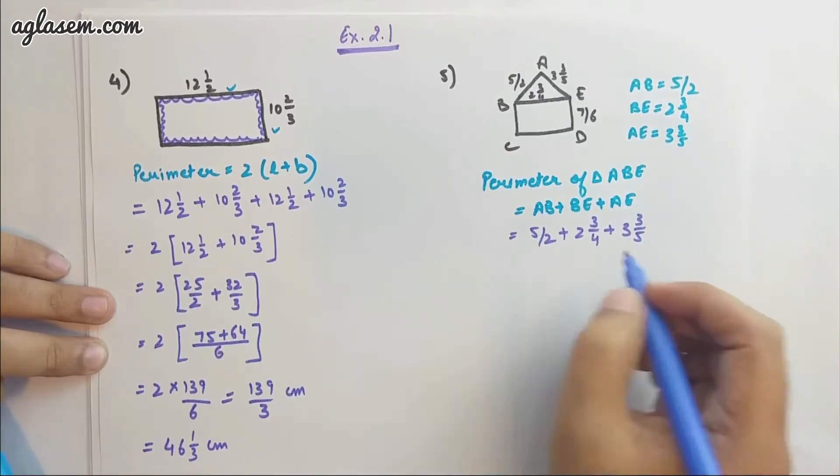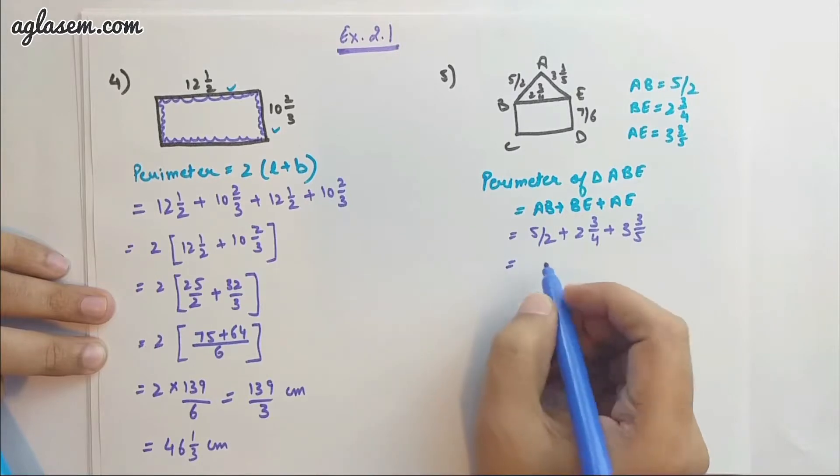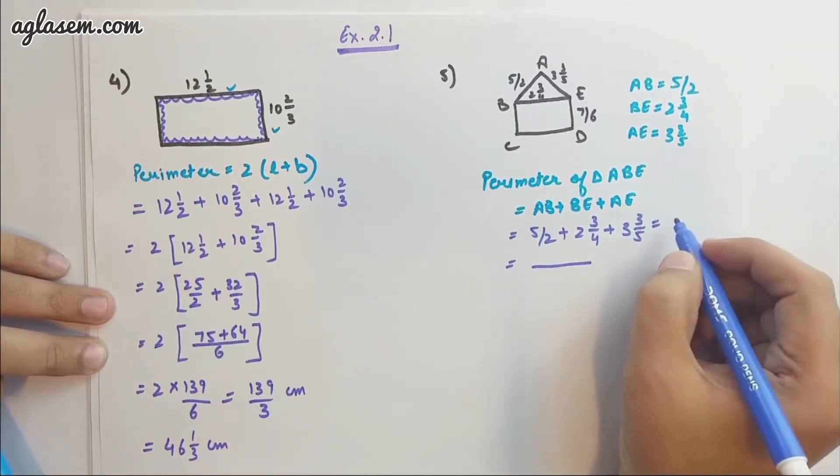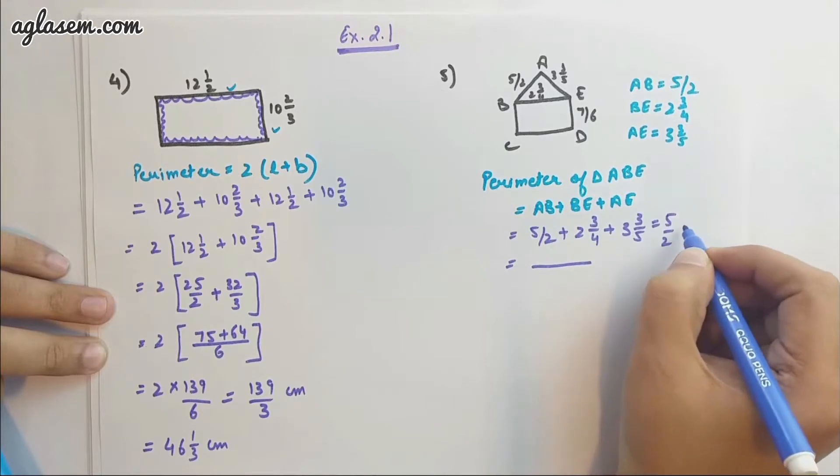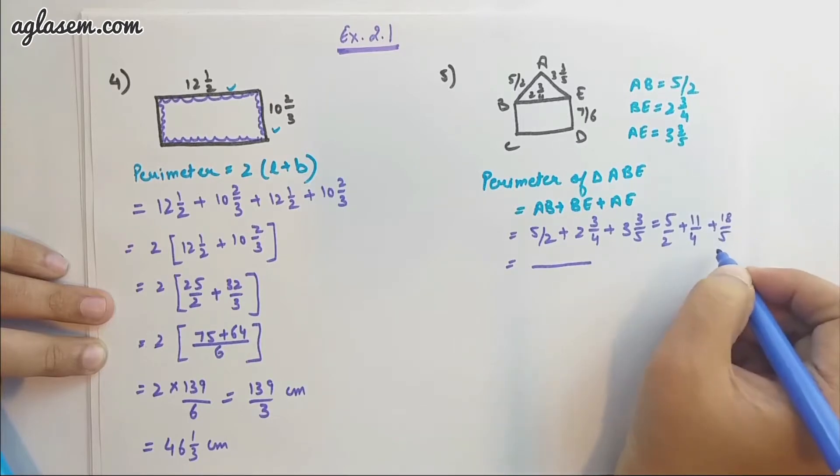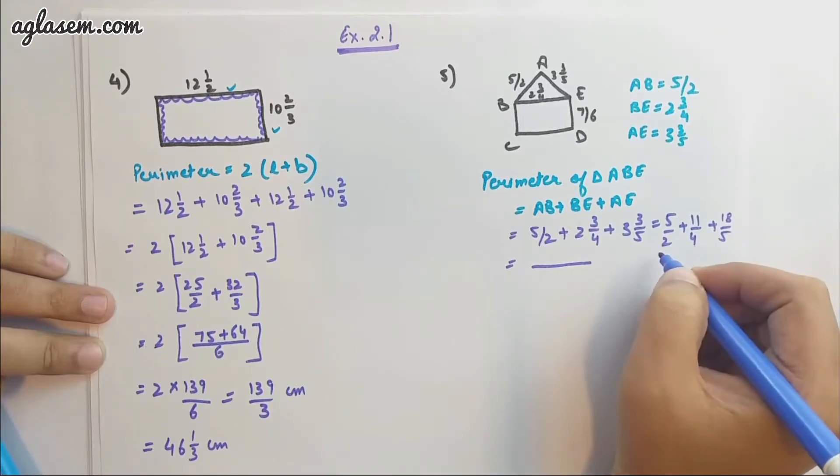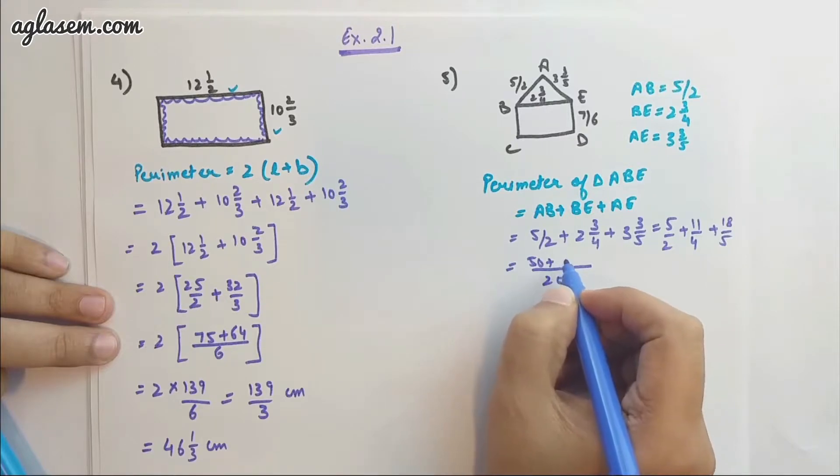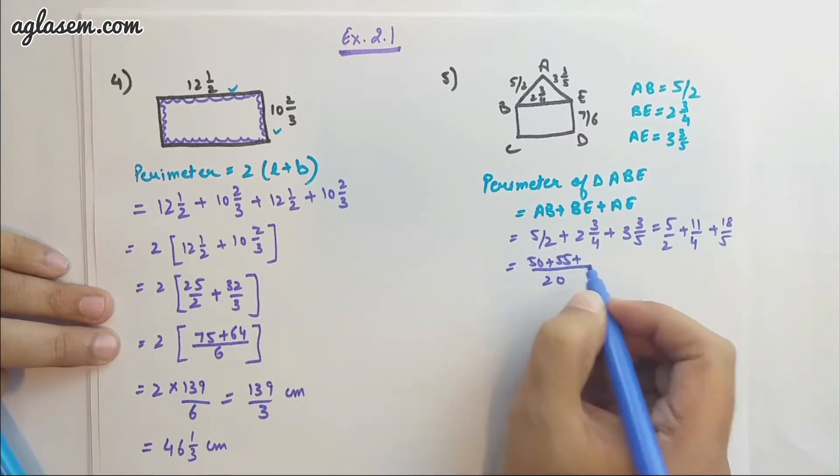We need to have LCM before that, so let's change it into fractions first. It's 5/2 + 11/4 + 18/5. The LCM is 20, so we have 50 here, 55 here, and finally 72.